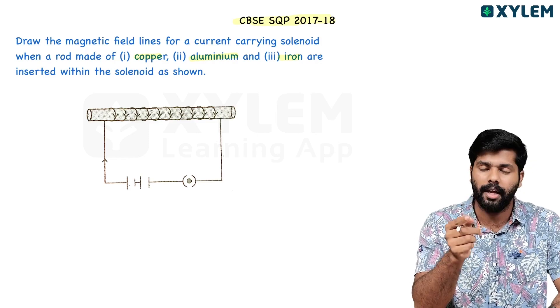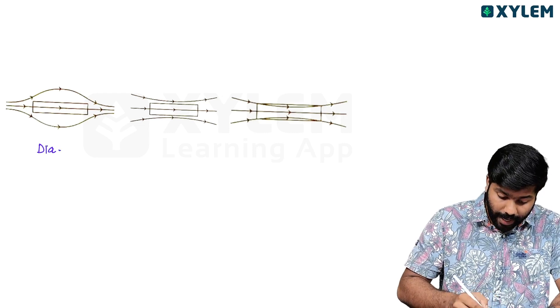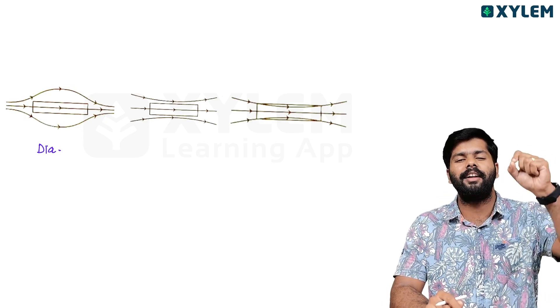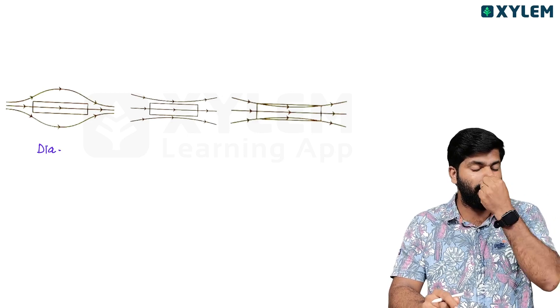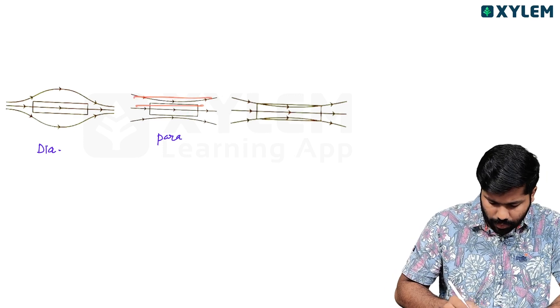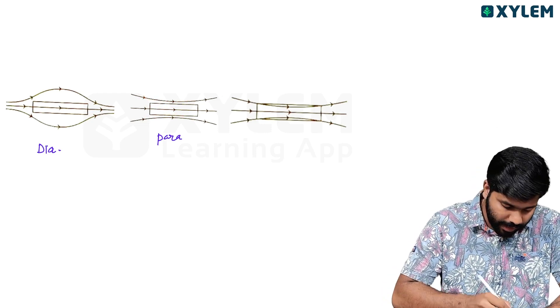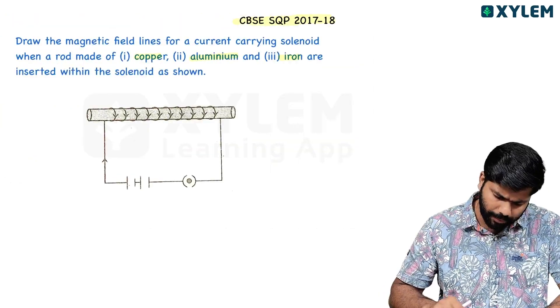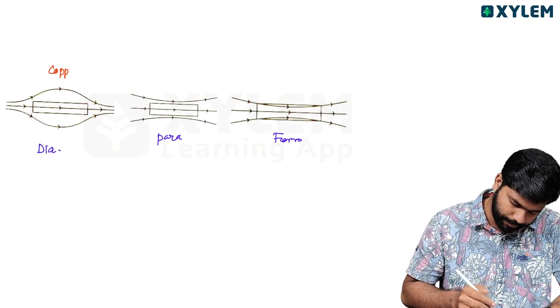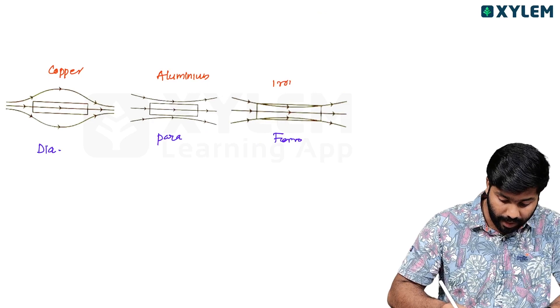For diamagnetic material (copper): magnetic field lines are expelled — the field is weaker inside. For paramagnetic material (aluminium): magnetic field lines are slightly concentrated inside, permeability is slightly greater than 1. For ferromagnetic material (iron): field lines are strongly concentrated inside. So the answers are copper (diamagnetic), aluminium (paramagnetic), and iron (ferromagnetic).